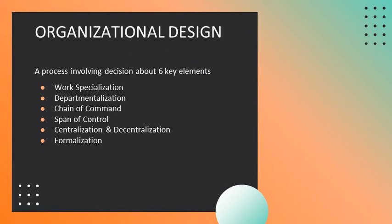Fifth, centralization and decentralization: centralization is the degree to which decision making is centralized at a single point. In a centralized organization, top managers make all decisions and lower-level employees carry out those orders, while in a decentralized organization, decision making is pushed down to managers who are closest to the action. Sixth, formalization is the degree to which jobs within an organization are standardized and the extent to which employee behavior is guided by rules and procedures. Highly formalized jobs offer little discretion over what is to be done, while low formalization means fewer constraints on how employees do their work.